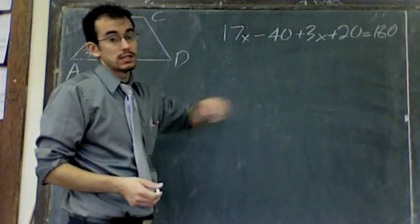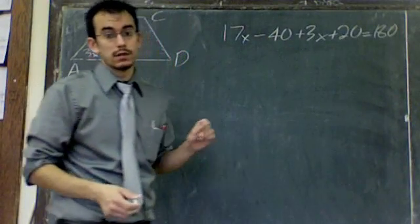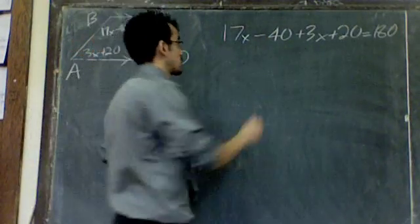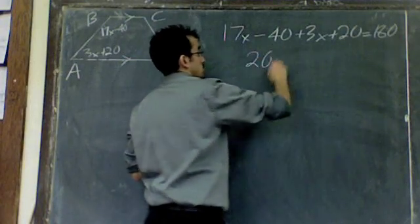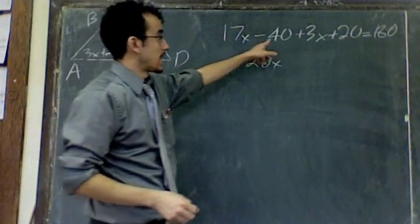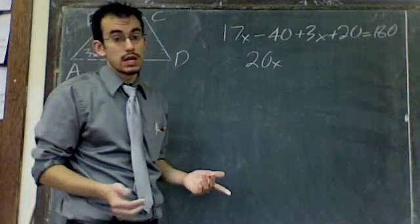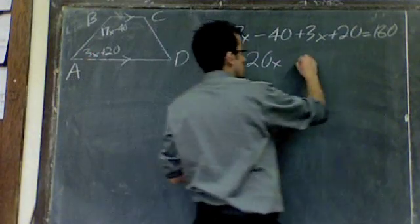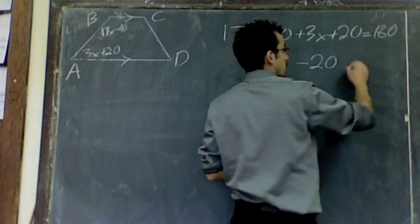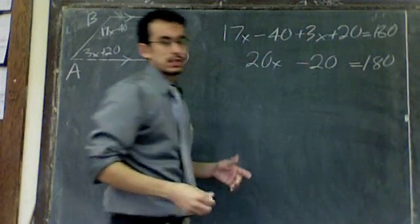On the left side, I see a whole bunch of X's and constants. I see 17X and 3X, and they're both positive. Well, 17X plus 3X is 20X. We also see constants, negative 40 and positive 20. Well, negative 40 plus 20, that's negative 20. And then we bring down the equals and the 180 on the other side. There was nothing to combine on the right side, so we just bring it down.